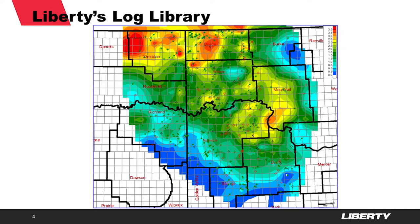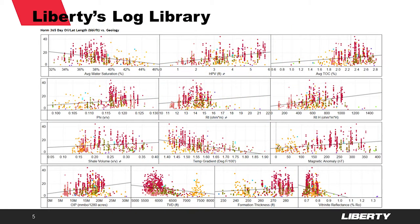Here's one example of a log derived map in the Williston Basin. This is Middle Bakken hydrocarbon pore volume, a great proxy for overall reservoir quality. With this map, I've sampled this log property to every lateral producing from the Middle Bakken. This allows us a more complete understanding of what's driving production responses.